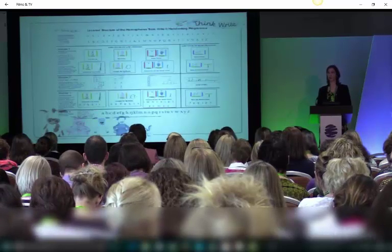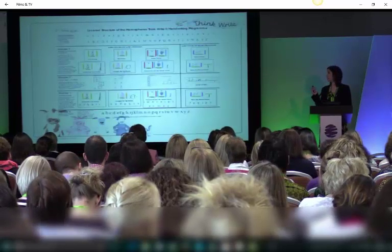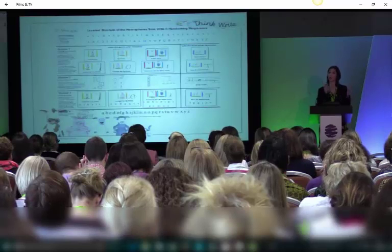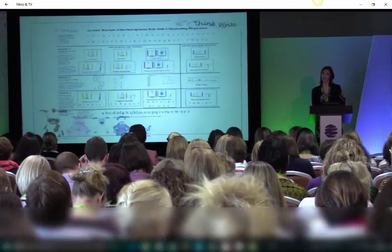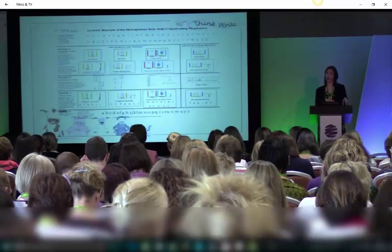So you start off with Module 1, which is an introduction. We want children to learn the letter families. Well, in the ThinkRight, they become animal families.